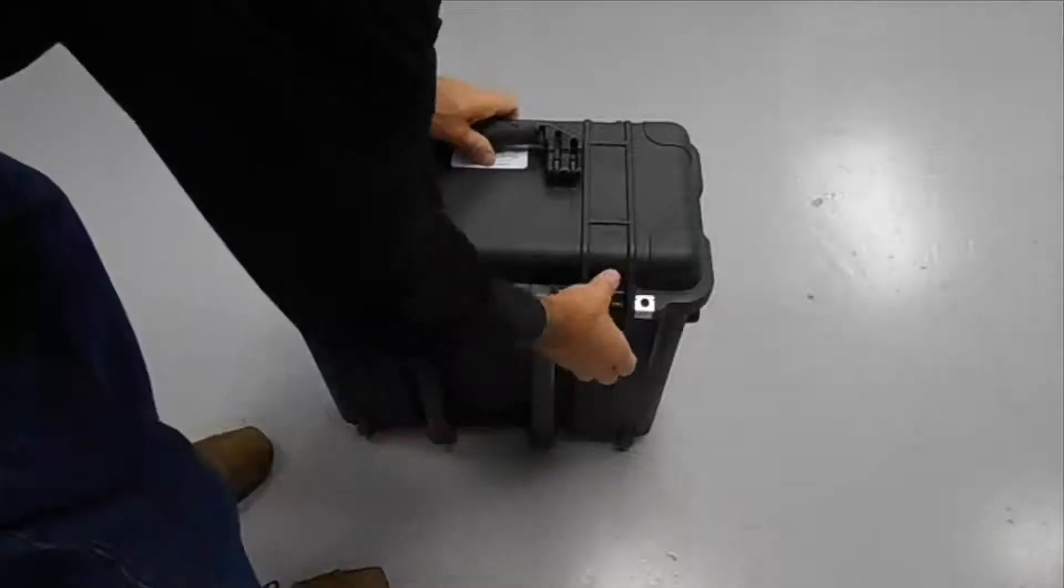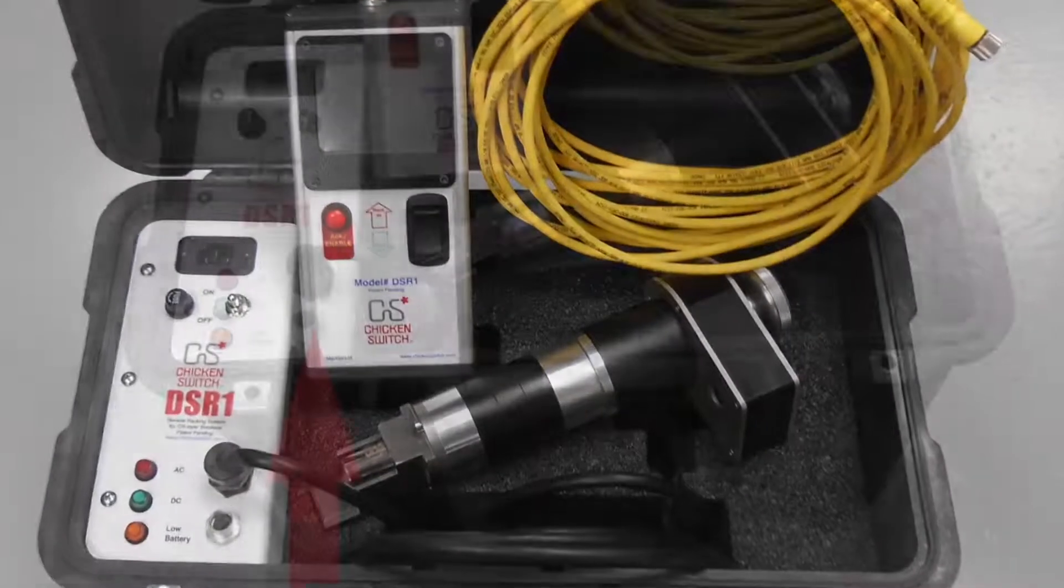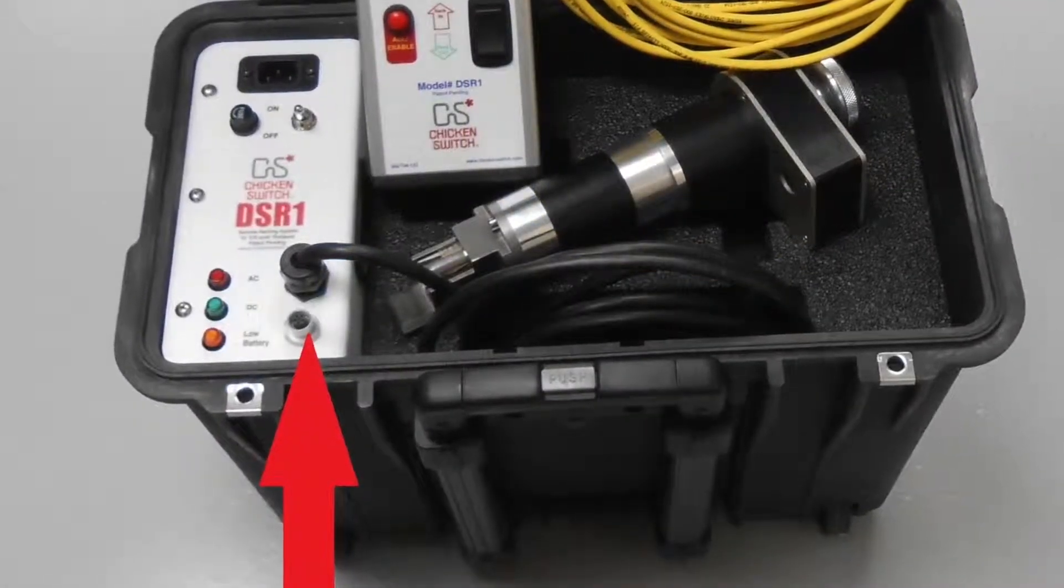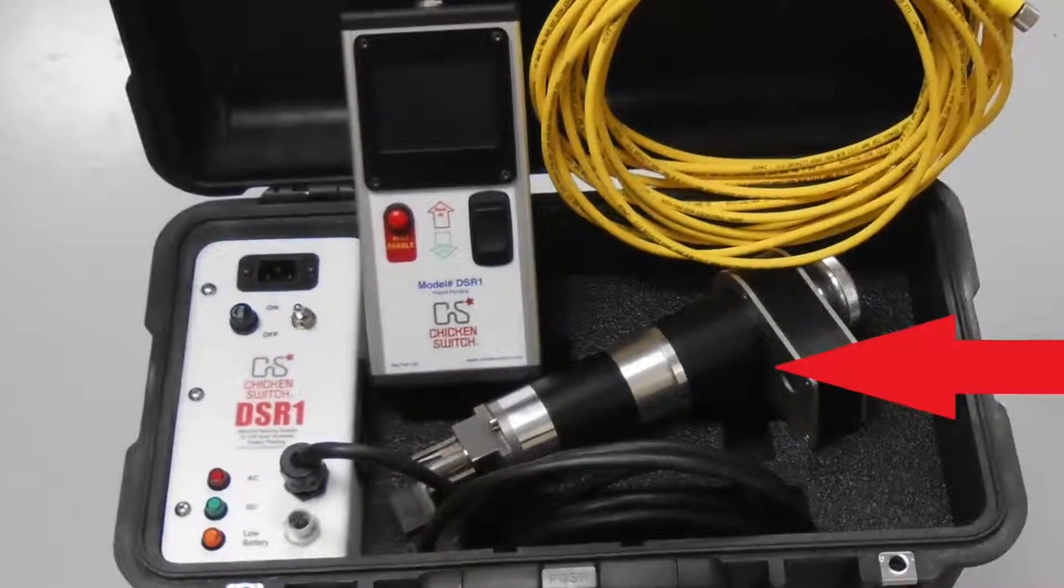There are three major components to the DSR-1: the power supply, which can be fed from either the onboard sealed lead-acid batteries or an AC power source; the handheld control unit; and the racking head.